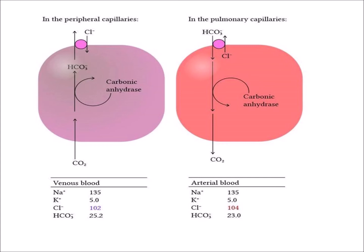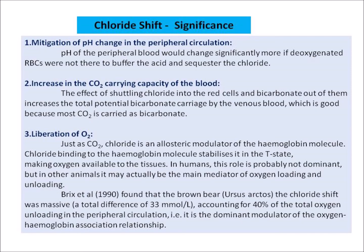This diagram shows the chloride shift in the peripheral capillaries and the reverse of the chloride shift in the pulmonary capillaries. Chloride shift occurs in venous blood in the peripheral capillaries, while reverse chloride shift occurs in arterial blood.